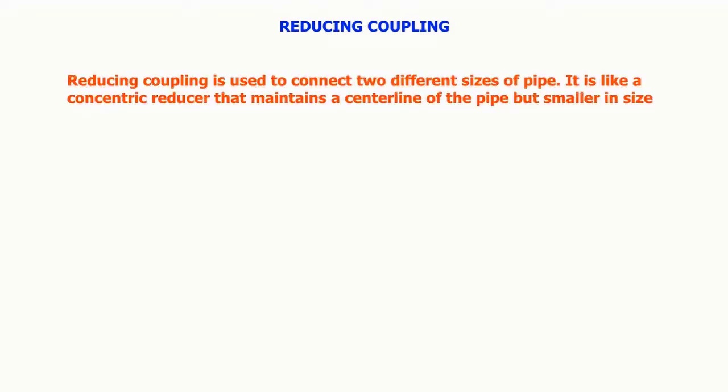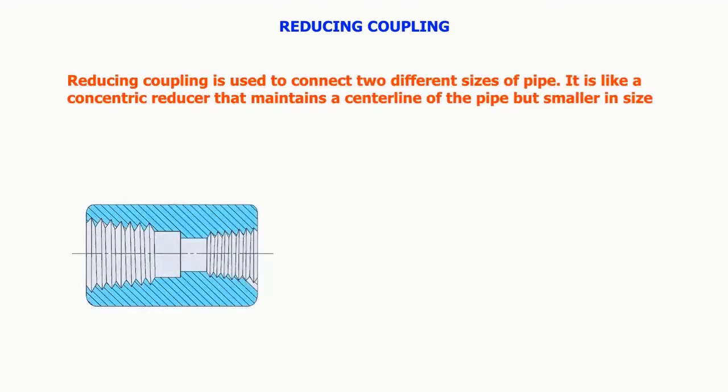Reducing coupling is used to connect two different sizes of pipes. It is like a concentric reducer that maintains a centerline of the pipe but smaller in size.